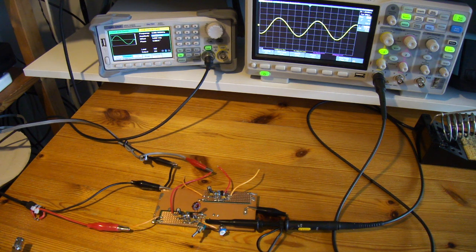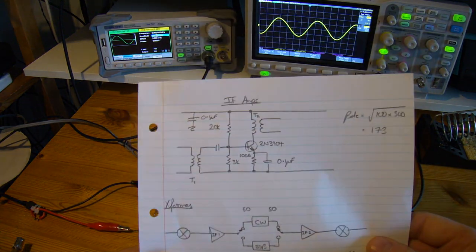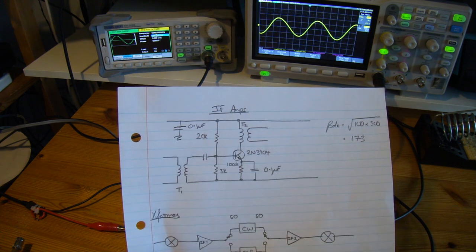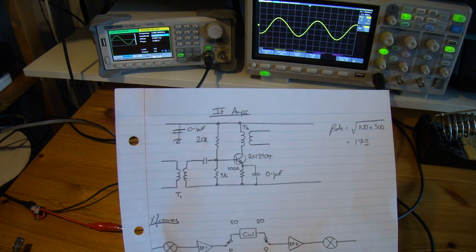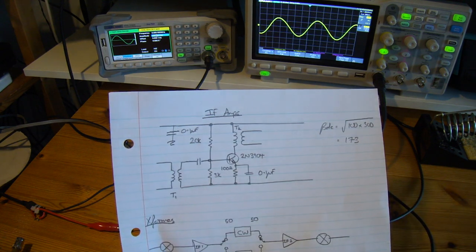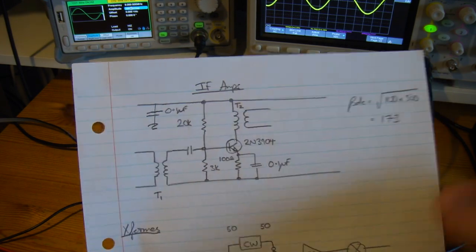I mentioned on a previous video that from the IF amplifier point of view, I'm going to use the same core configuration that I've used for the other amplifiers on the radio. For simplicity I'm just going to stick with the 3904 as the transistor.